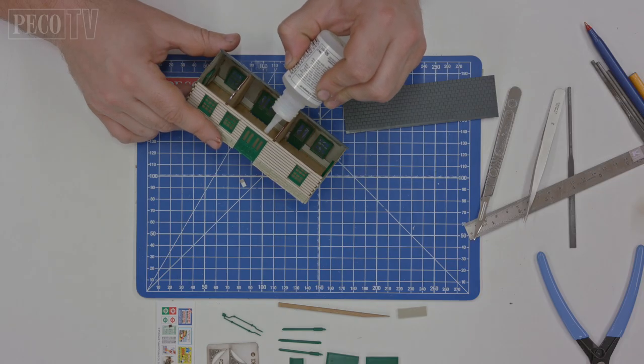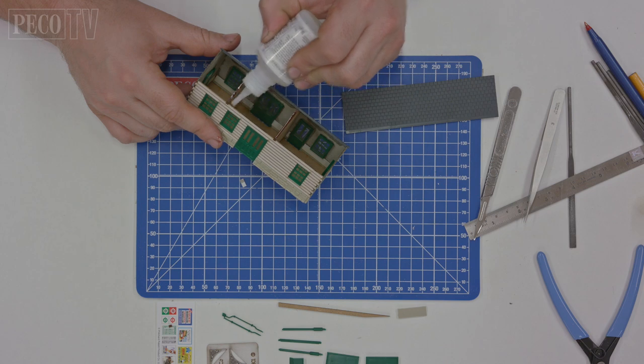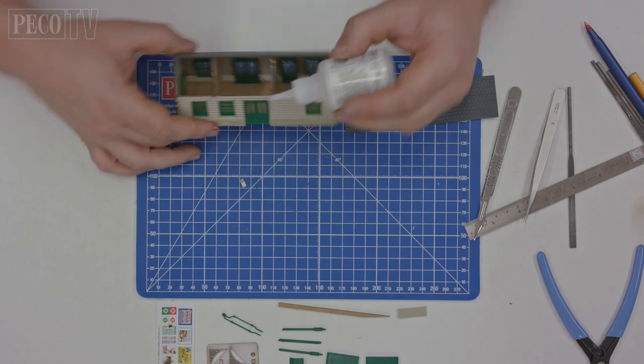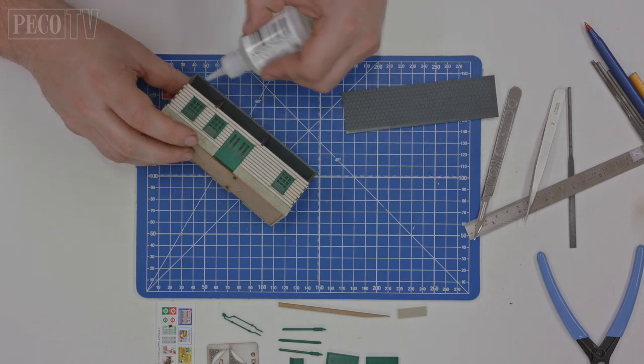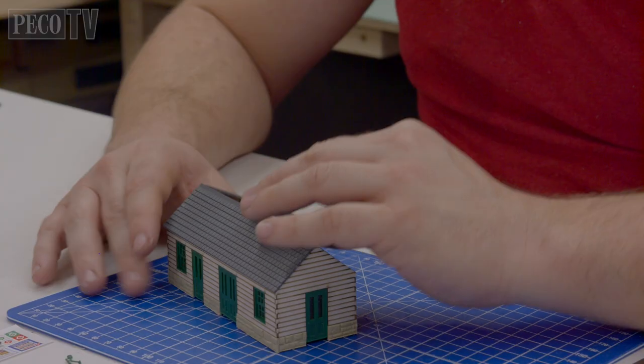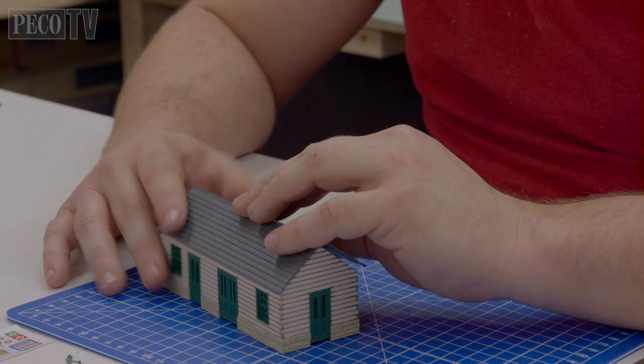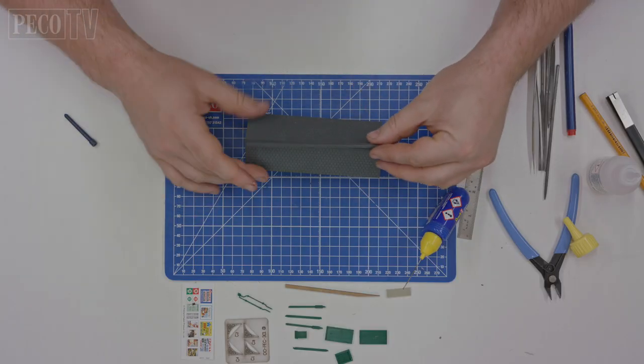Then referring to your instructions make sure you put the roof on the correct way round using super glue to bond the wood and plastic together. Then attach the roof ridge.